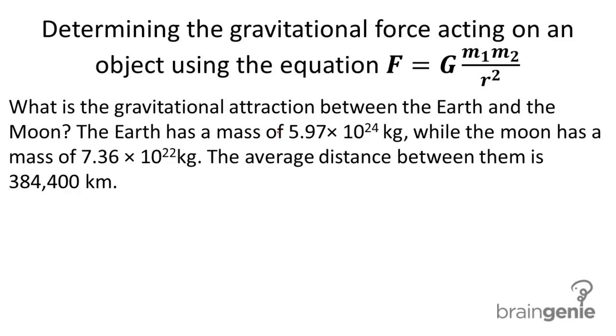What is the gravitational attraction between the Earth and the Moon? The Earth has a mass of 5.97 times 10 to the 24 kilograms, while the Moon has a mass of 7.36 times 10 to the 22 kilograms. The average distance between them is 384,400 kilometers.